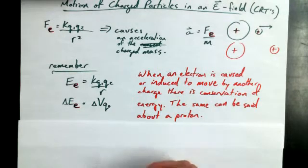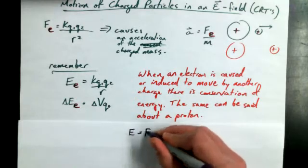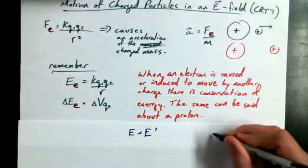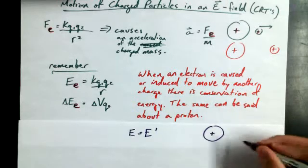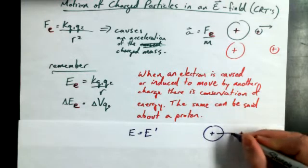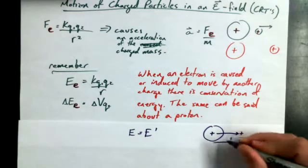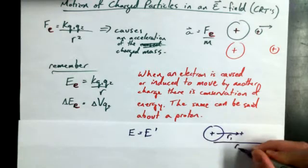So, I'm going to say that e equals e primed for this really massive object with a proton that moves from, let's say, r1 to a new position, r2.